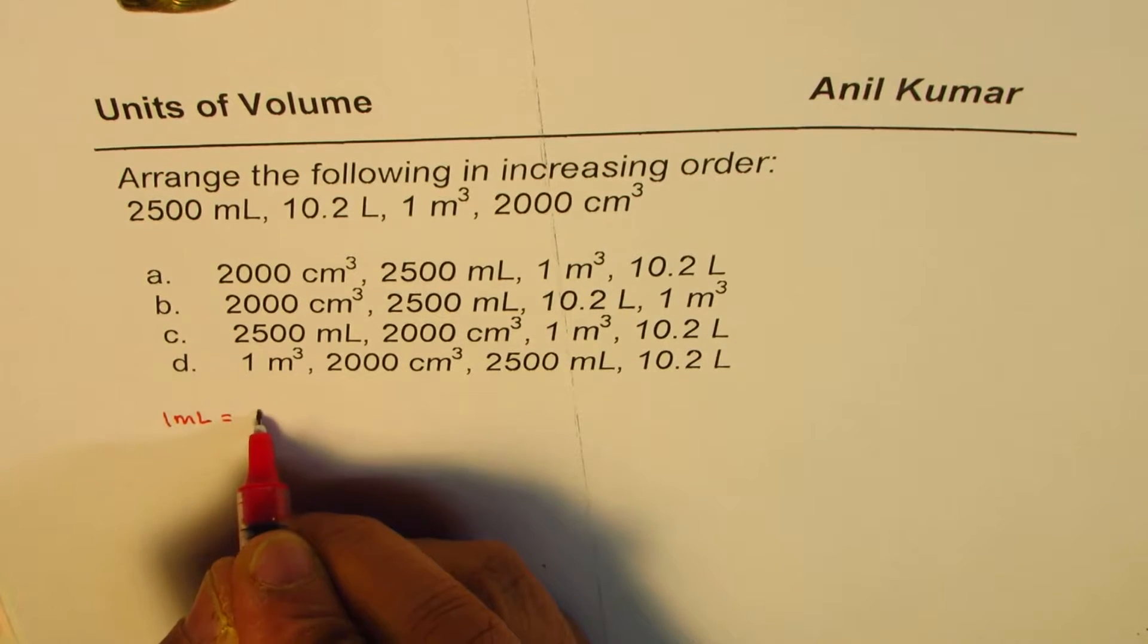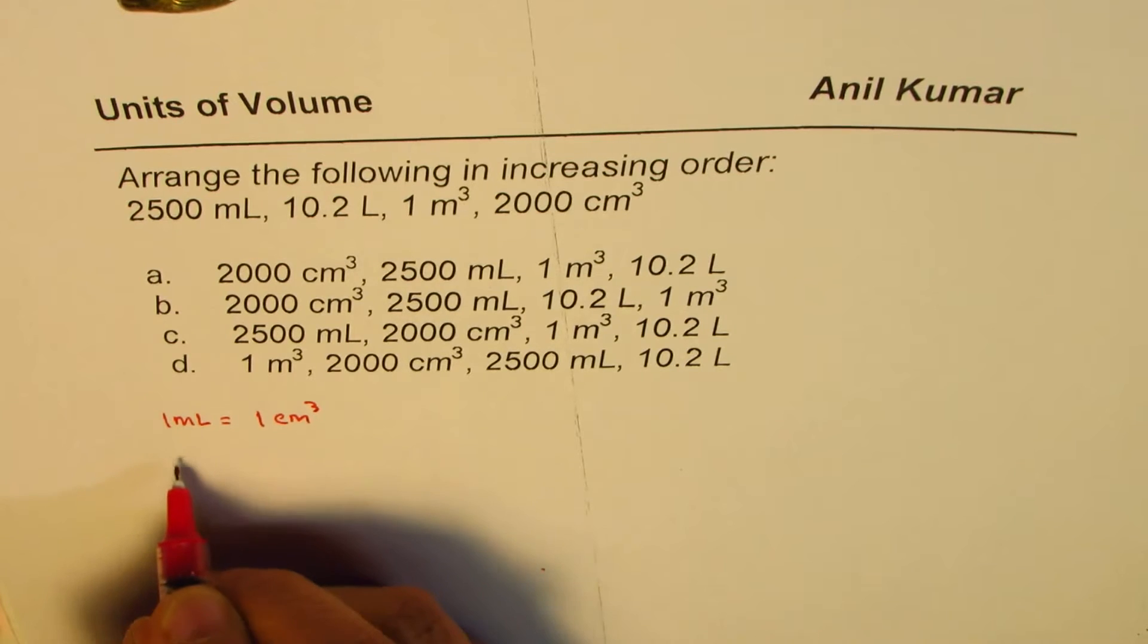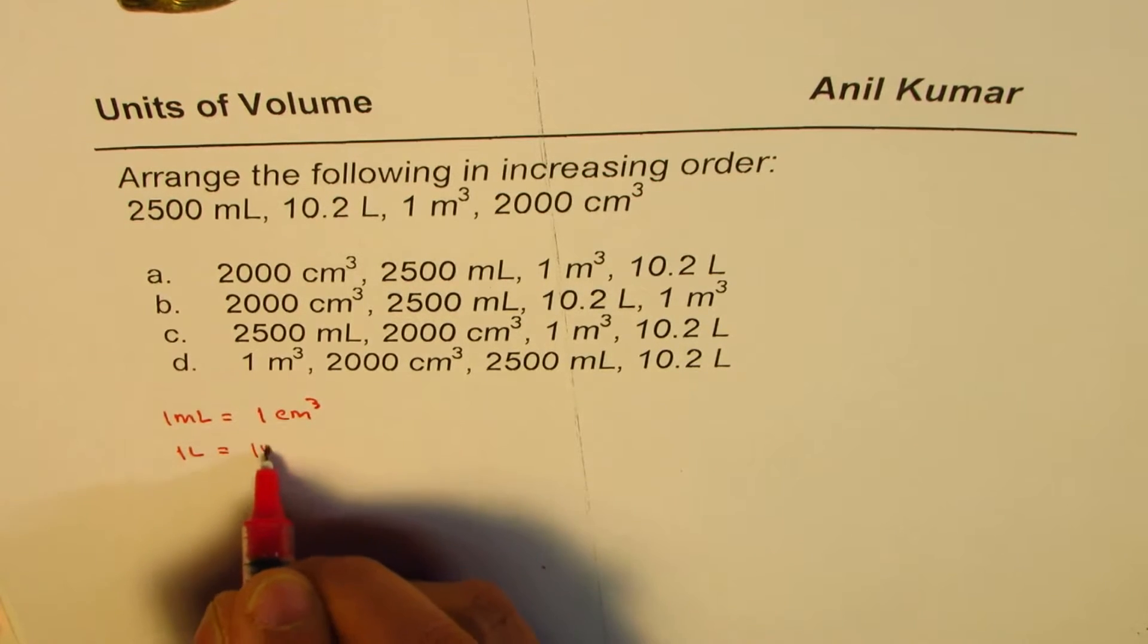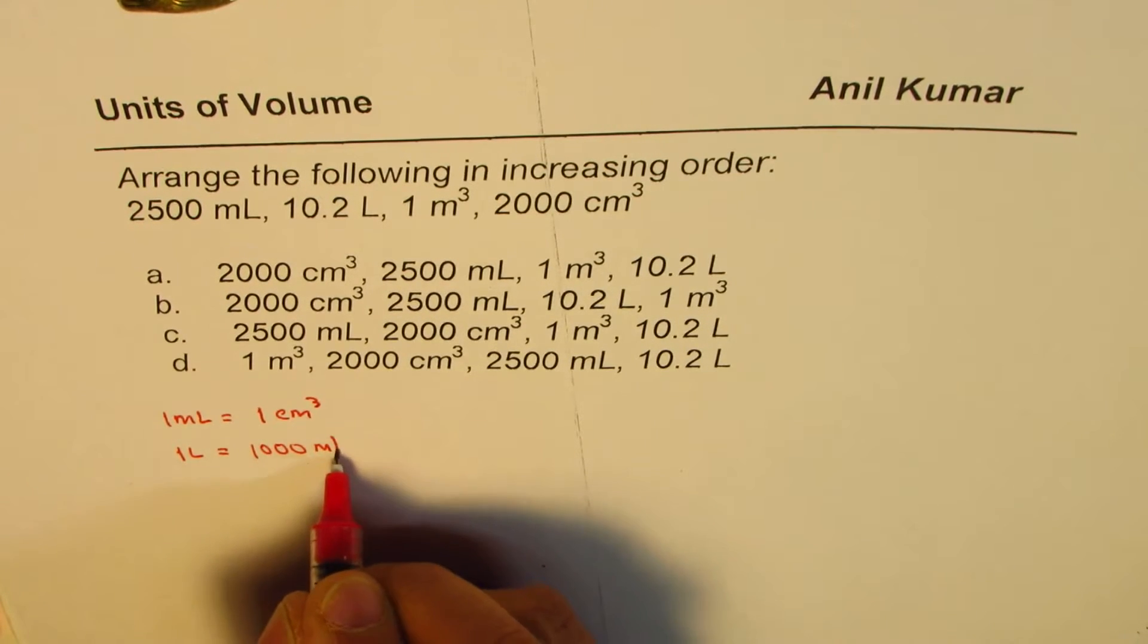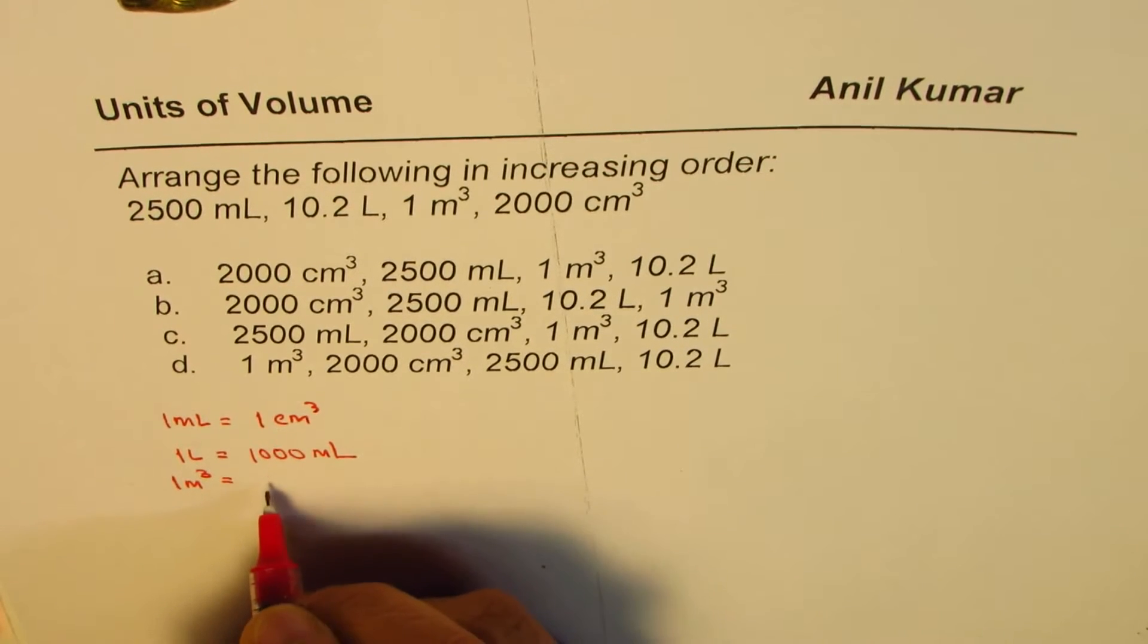So what we know is that one milliliter is equals to one centimeter cube. They are exactly the same. On the other hand, one liter is 1000 milliliters. One meter cube is equals to 1000 liters.